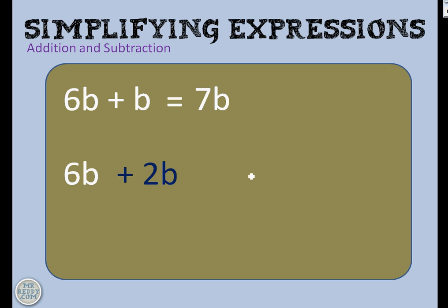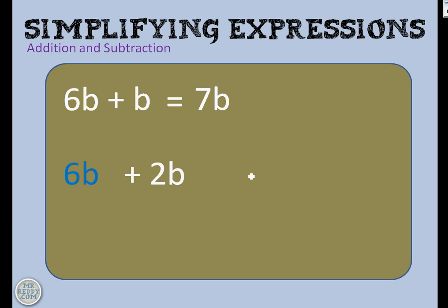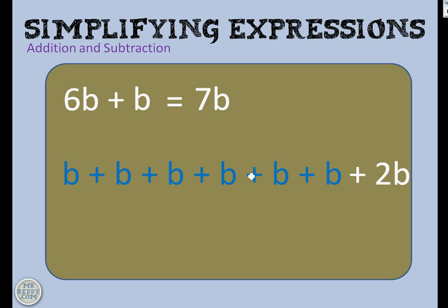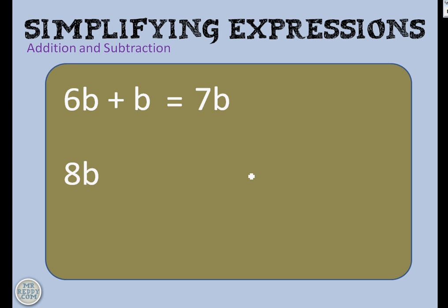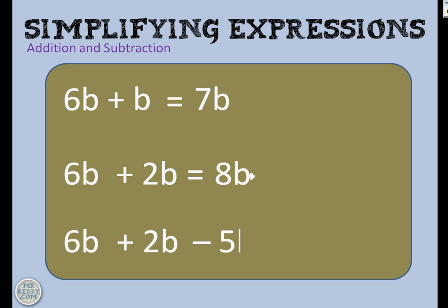6b plus 2b — well, let me remind you that 2b stands for b plus b. And 6b stands for b plus b plus b plus b plus b plus b. Then we're going to add on 2b. So how many b's have we got altogether? 8b. Summarized: 6b plus 2b equals 8b.